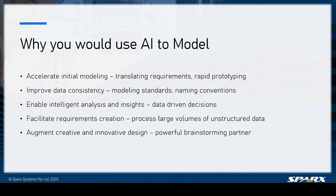But on the other hand, why should you use AI to help build your model? It is really good at accelerating the initial modeling phase — translating requirements, rapid prototyping, and all that, drawing on the models it has been trained on to provide information you yourself might not have thought of. It can also improve data consistency, exporting information using different modeling standards, naming conventions, and formatting, producing consistent results for you to consume. And it enables intelligent analysis and insights — data-driven decisions that it can do far more efficiently than a human can.